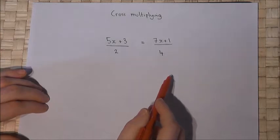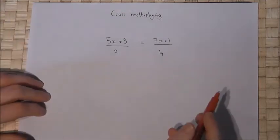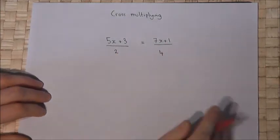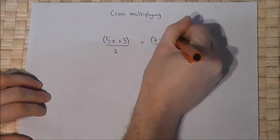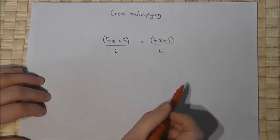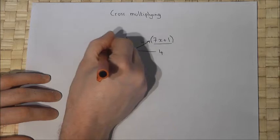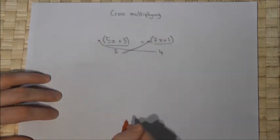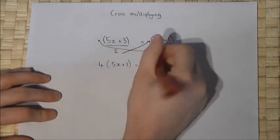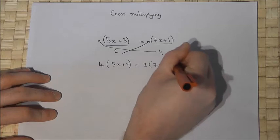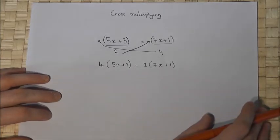The next part looks at another method used when there are only two fractions, called cross multiplying — though it is essentially the same method. I have two fractions, with the top terms written in brackets. The cross multiplying method says: multiply the right-hand side by the 2 and the left-hand side by the 4. So the equation becomes 4 lots of (5x + 3) equals 2 lots of (7x + 1).